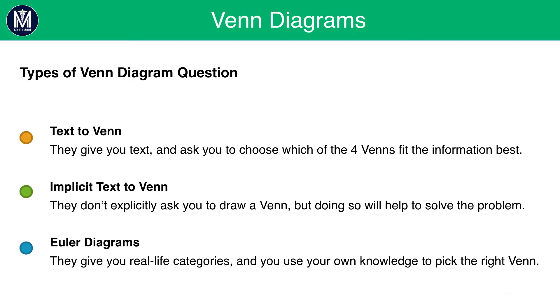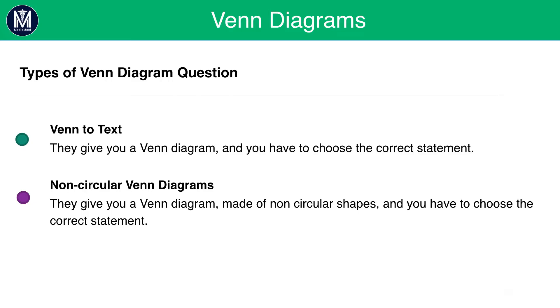One type is text to Venn. This is where they give you text and ask to choose which of the four Venns fit the information best. You will also get questions that are implicit. They don't explicitly ask you to draw a Venn but drawing one will help you solve the problem. You have Euler diagrams. These are like Venn diagrams but they give you real life categories and you have to use your own knowledge to pick up the right Venn. You can also get Venn to text where they give you a Venn diagram and you have to choose the correct statement. And non-circular Venn diagrams where they give you a Venn diagram made of non-circular shapes and you have to choose the correct statement.